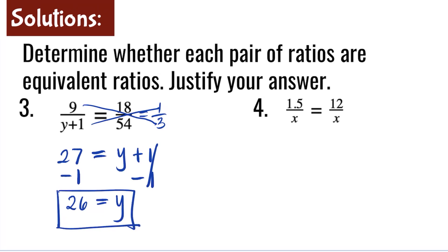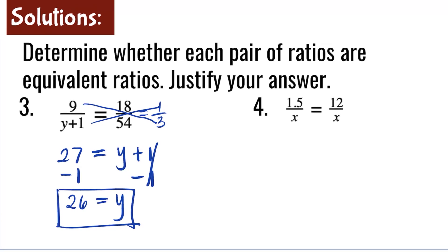Question number 4 is a tricky question. Doing cross products, 1.5 times x is 1.5x is equal to 12x. We need to isolate the variable on one side. So in this case, I will subtract 1.5x from both left and right. 1.5x minus 1.5x is 0x or simply 0.